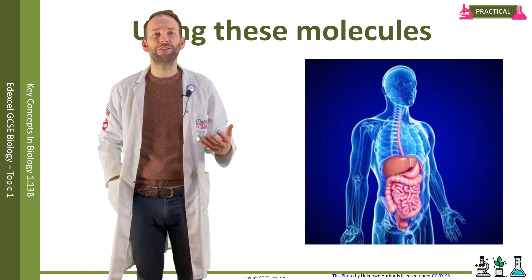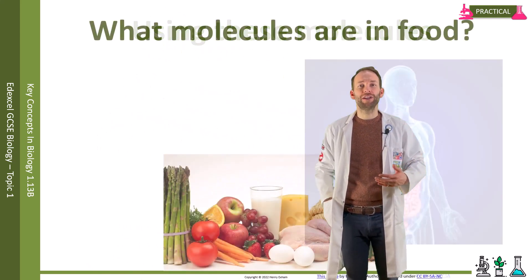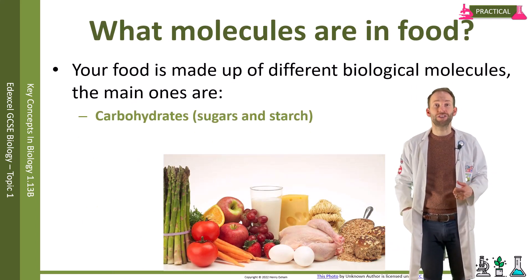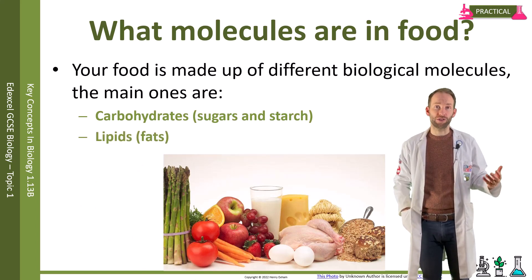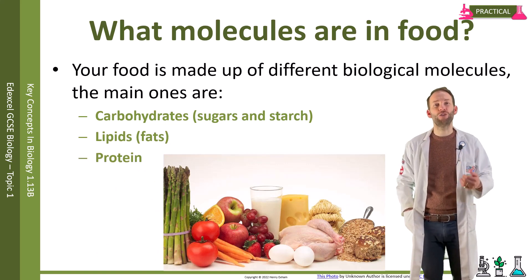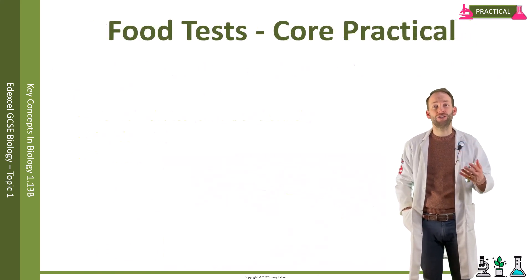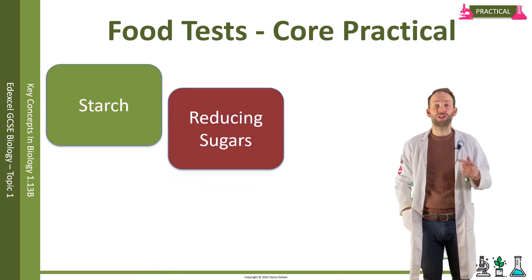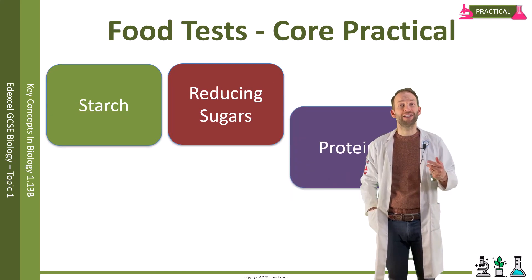What molecules are in food? It's made up of different biological molecules, and the main ones are carbohydrates — which involves sugars and starch — lipids, also known as fats, and protein. In this practical, you're going to carry out four different food tests to detect these biological molecules: starch, reducing sugars, protein, and fats.